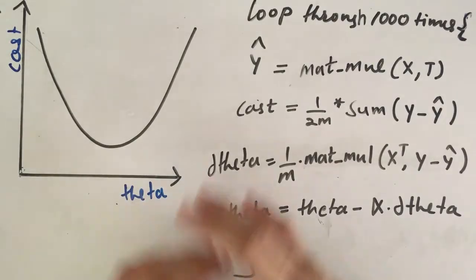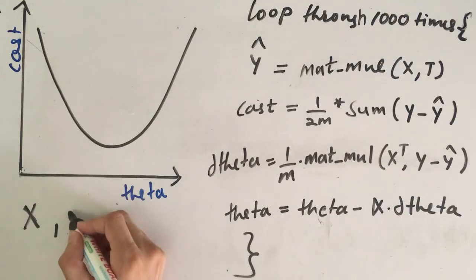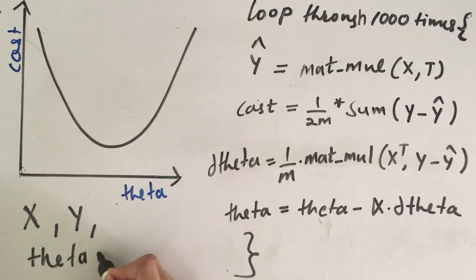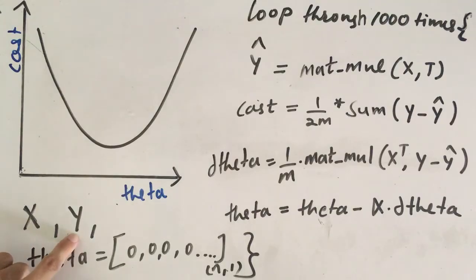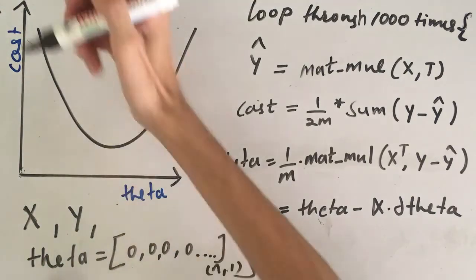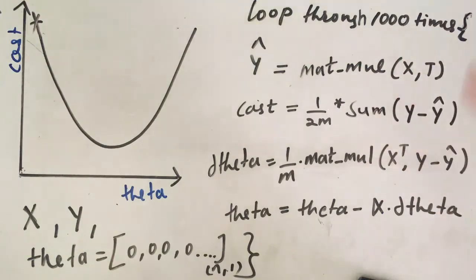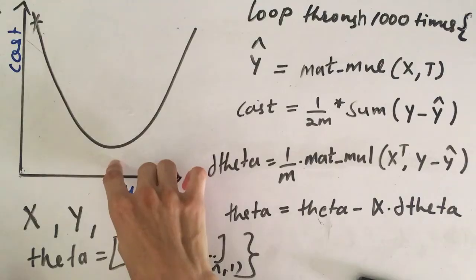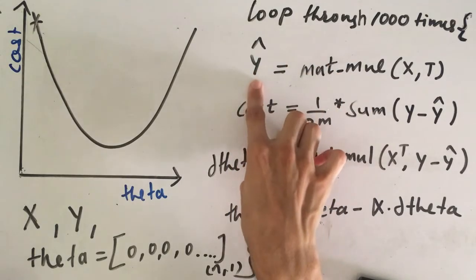Now we are going to implement the gradient descent algorithm completely. At the beginning we have our data set X and labels Y. We initialize the theta vector as all zeros with size N × 1. Since theta is initialized to zeros it will start near a very large cost value. We then loop — let's say a thousand times, or as many times as needed to reach the minimum. First we find the predictions Y-hat.